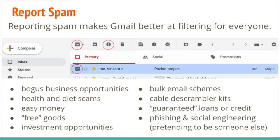Thinking about what spam is — here's a non-exhaustive list from the FTC of common spam messages: bogus business opportunities, health and diet scams, easy money, free goods, investment opportunities, bulk email schemes, cable de-scrambler kits, guaranteed loans or credit, as well as phishing and social engineering — which is when someone's pretending to be a legitimate source that you actually know, but it's not really coming from their real email address. Watch out for those kinds of things and make sure to mark them as suspicious.